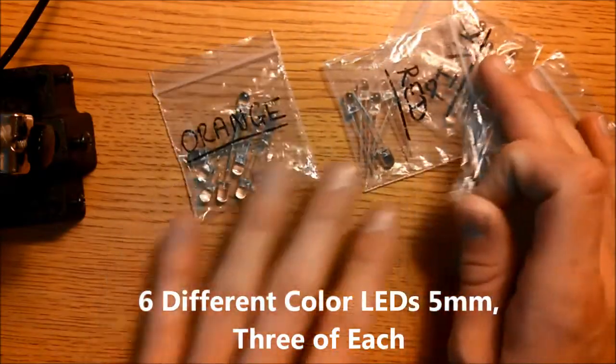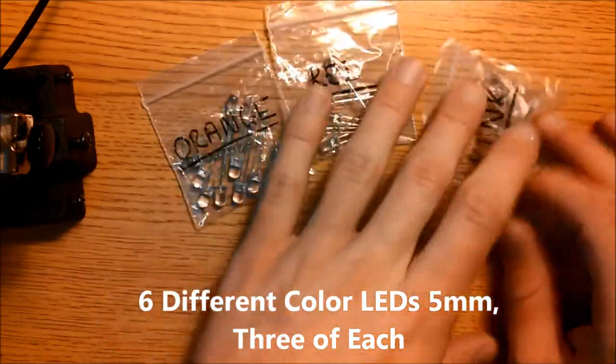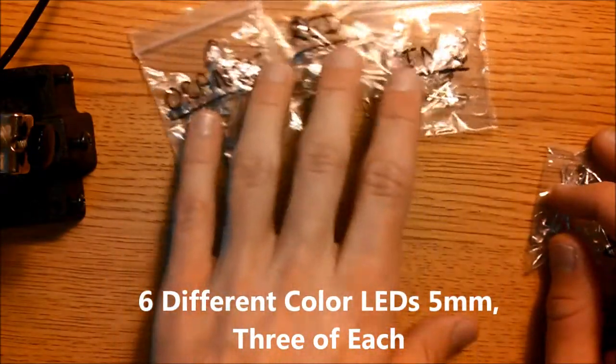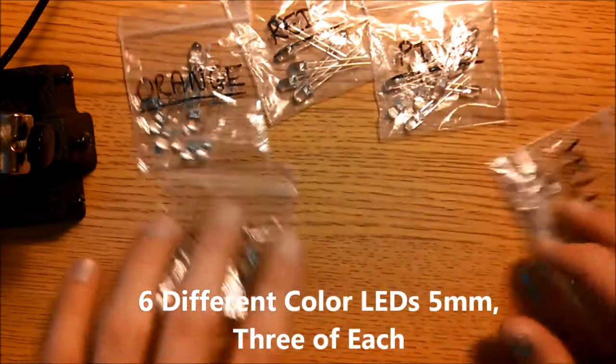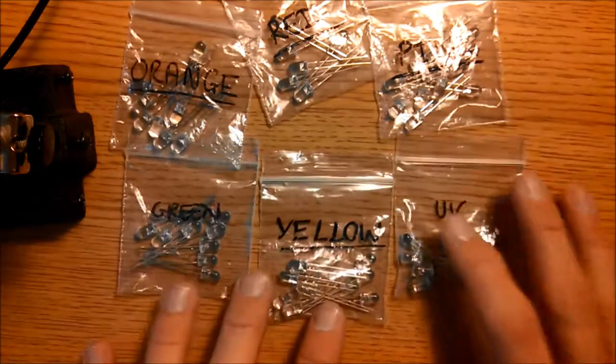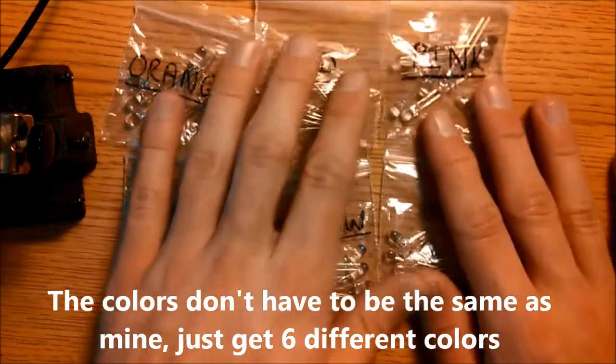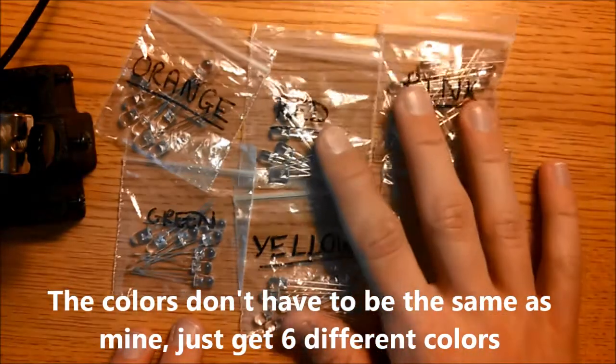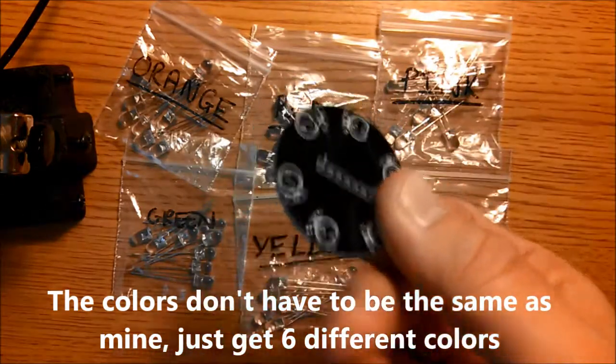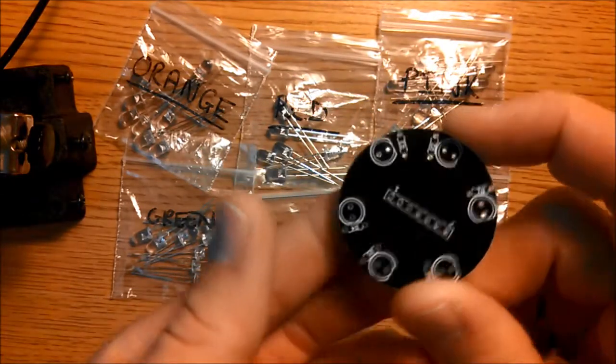You will need 6 different types of LEDs. I have orange, red, pink, green, yellow, and UV. You will need 3 of each. It doesn't matter what colors you choose as long as they're different colors. This is for the ear puck, so the more colors you have the better.